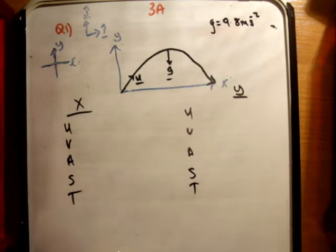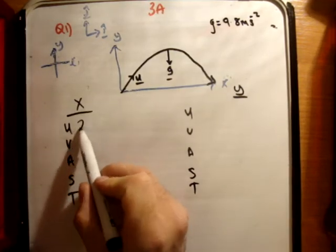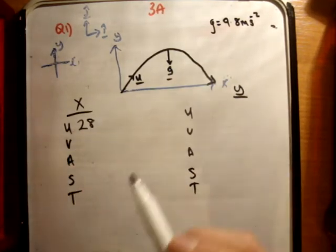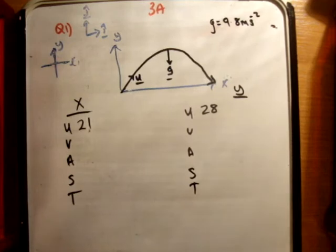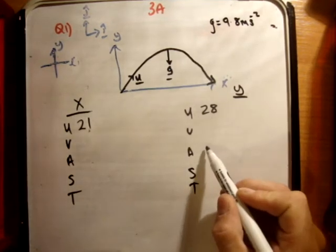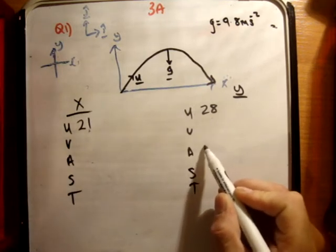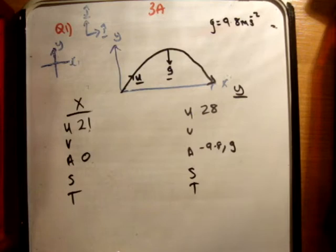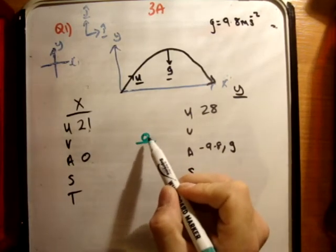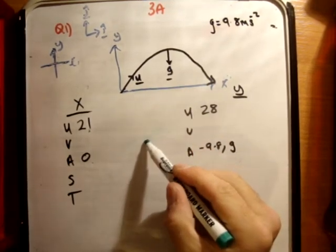Let's fill in the information we know. We're told it's fired with an initial velocity of 21î — so there are 21 units of velocity in the x-direction — and 28 units of velocity in the y-direction. The acceleration in the y is minus g, so minus 9.8, and the acceleration in the x-axis is zero. We're asked to find the greatest height above the plane.